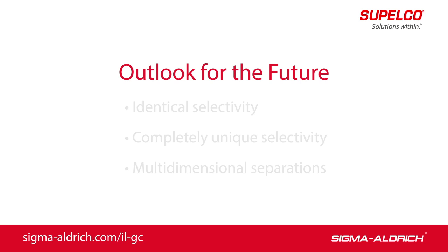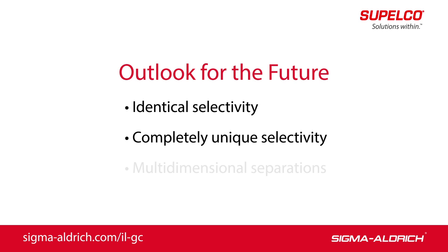Ionic liquid GC columns have the opportunity to impact current practices along several paths. Columns can be engineered with identical selectivity to non-ionic liquid columns, but with higher operating temperatures and less susceptibility to damage from moisture and or oxygen. Columns can be engineered with completely unique selectivity to non-ionic liquid columns, producing good peak shape and resolution for compounds of varying functionality. Columns can be used in multi-dimensional separations because of their engineered orthogonality and high thermal stability.